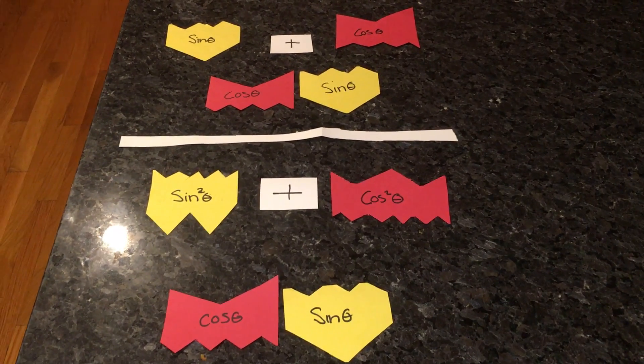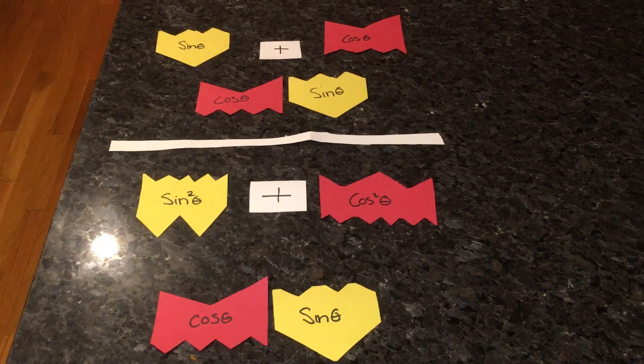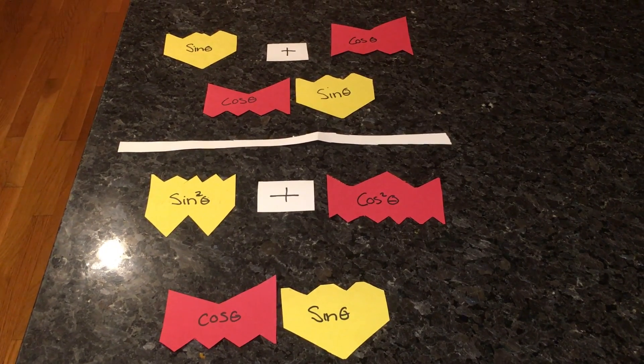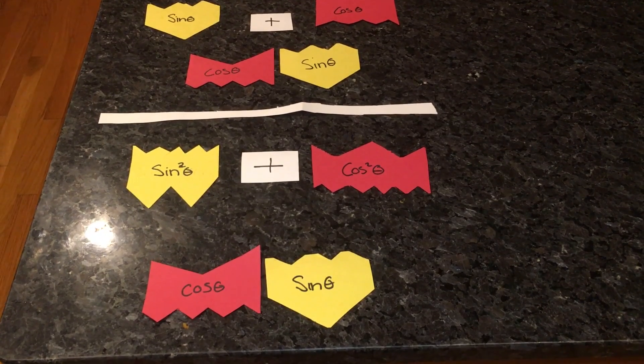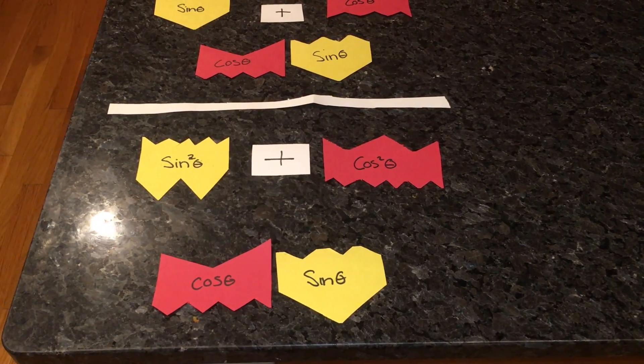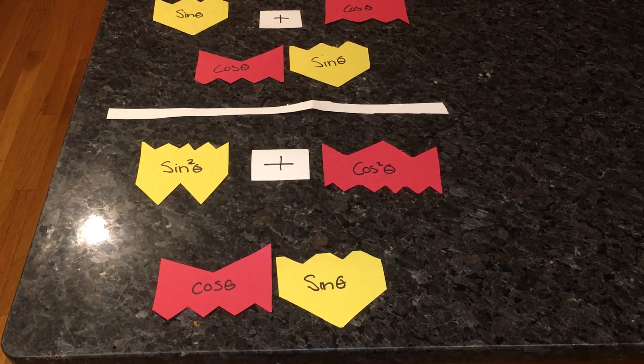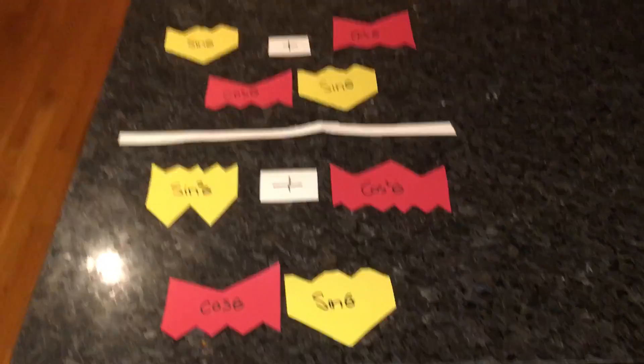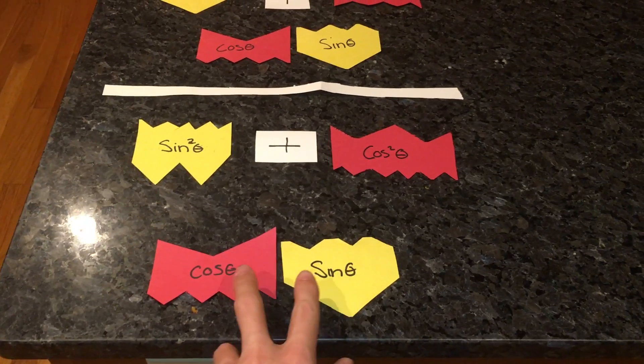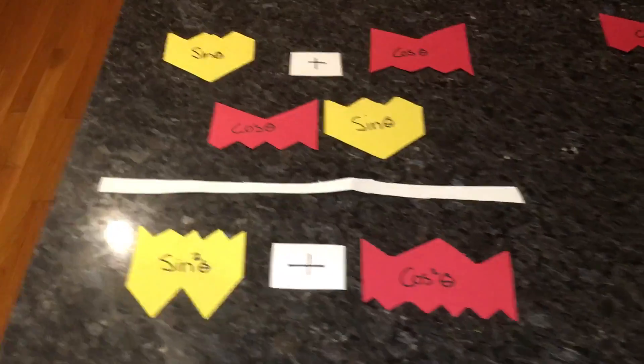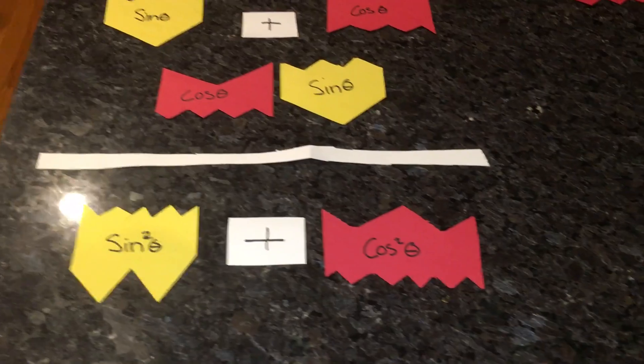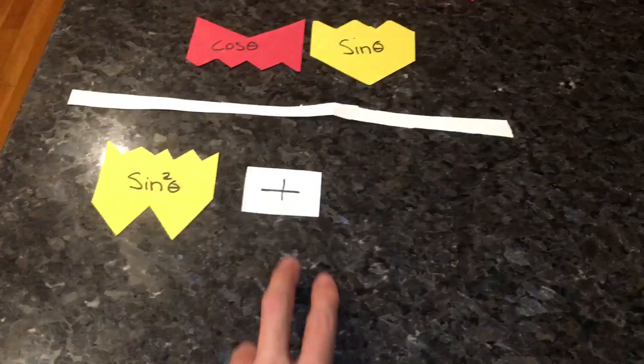So we have gotten to this step where we have sine plus cosine over cosine times sine, all over sine squared plus cosine squared over cosine times sine. Now, we have to multiply by the reciprocal. So if we are multiplying by the reciprocal, we have to bring these sine, cosine up here, and bring the cosine plus sine squared right here.